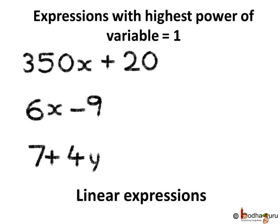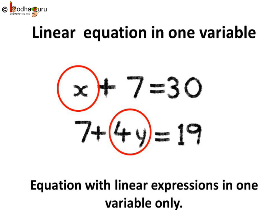Such expressions with highest power of variable equal to 1 are called linear expressions. So all these three expressions are linear expressions because the highest power of variable in each case is equal to 1. Equations with linear expressions in one variable only are called linear equations in one variable. For example, x plus 7 equal to 30 has one variable x with power 1, and 7 plus 4y equal to 19 has variable y with power 1.